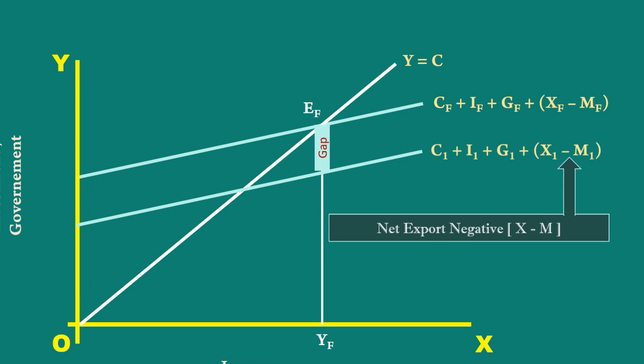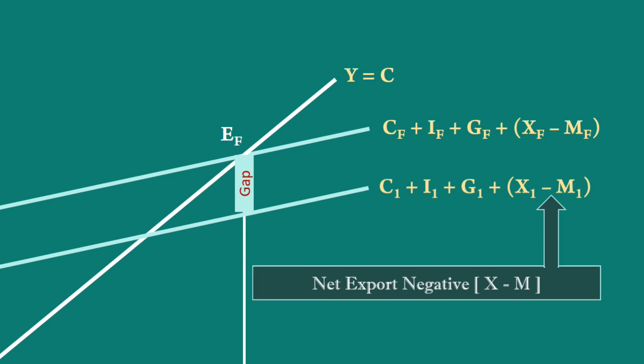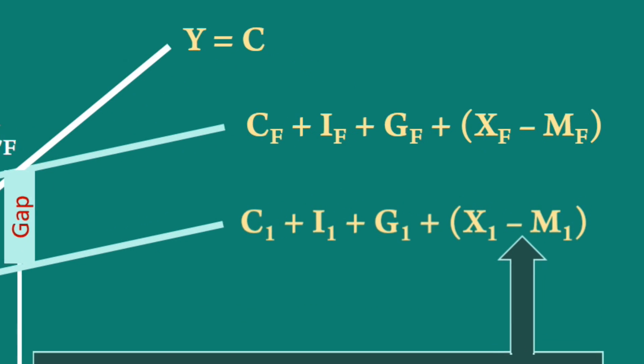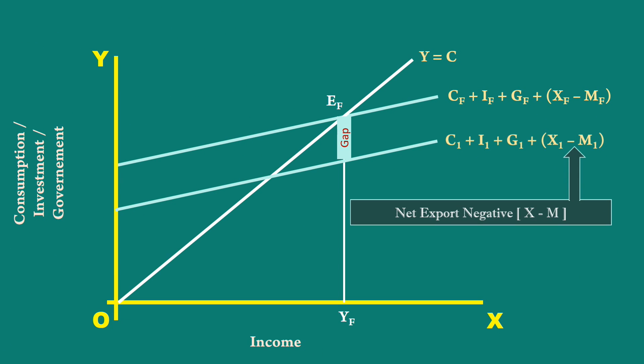You must understand that aggregate demand curve's shift may be caused by a change in any one of the factors or by a change in a few factors or by a change in all the factors simultaneously. But these are the factors causing a shift of aggregate demand curve either up or down.